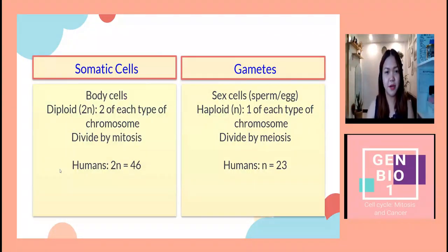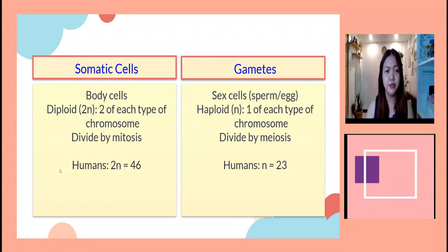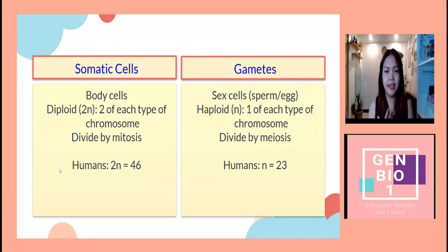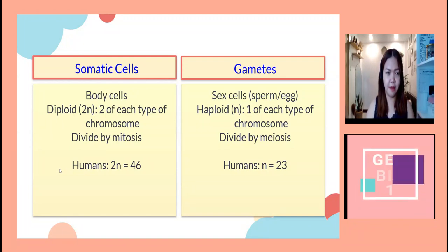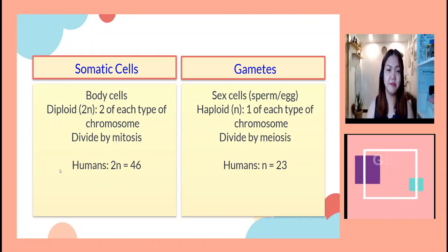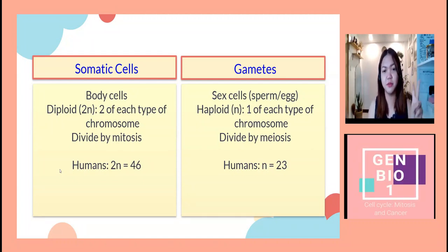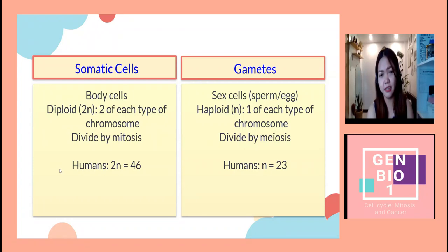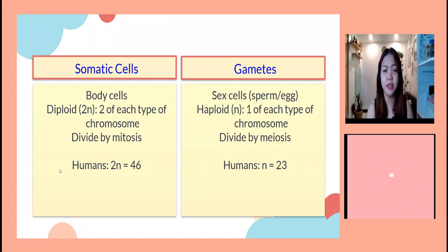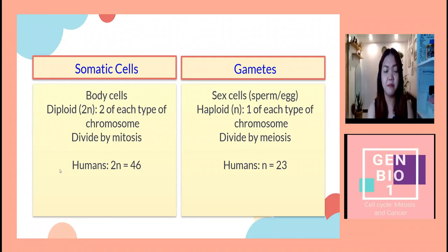Let's differentiate somatic cells from gametes. Somatic cells are the body cells — they make up the majority of the organism, their chromosomal content is 2N or diploid, meaning you have two of each type of chromosome, and they divide by mitosis. In humans, we have 46 chromosomes. Gametes are sex cells — we have two types: sperm and egg. They are haploid cells, having one of each type of chromosome, and they divide by meiosis. In humans, gametes have 23 chromosomes.